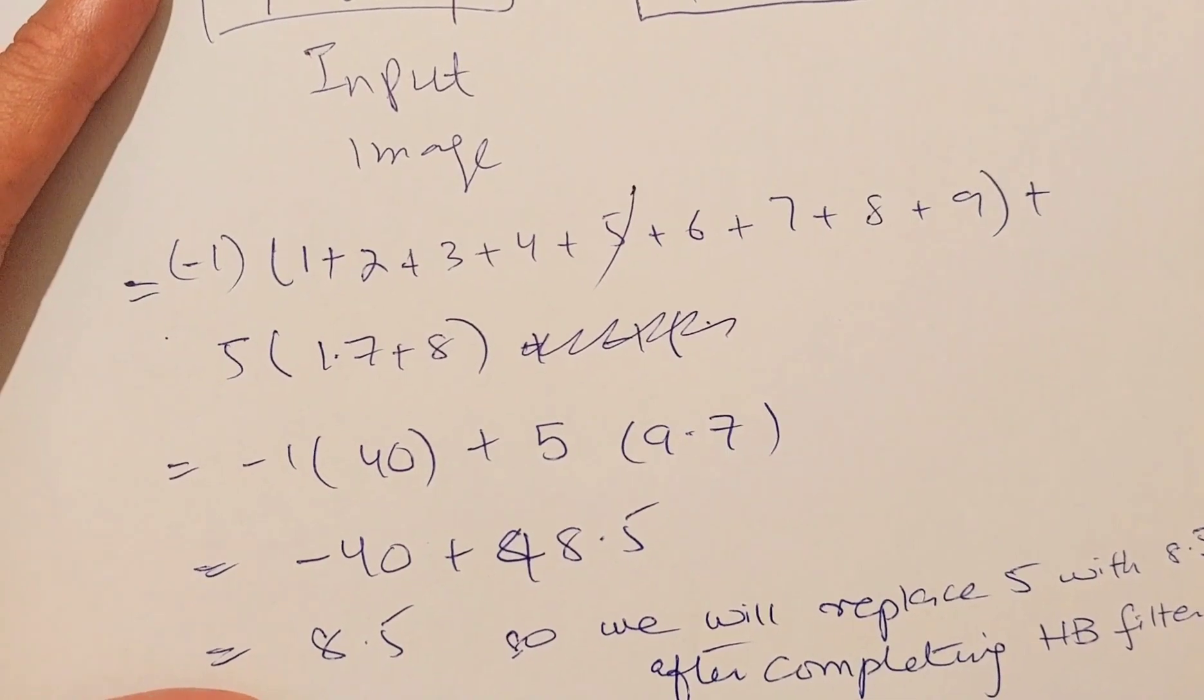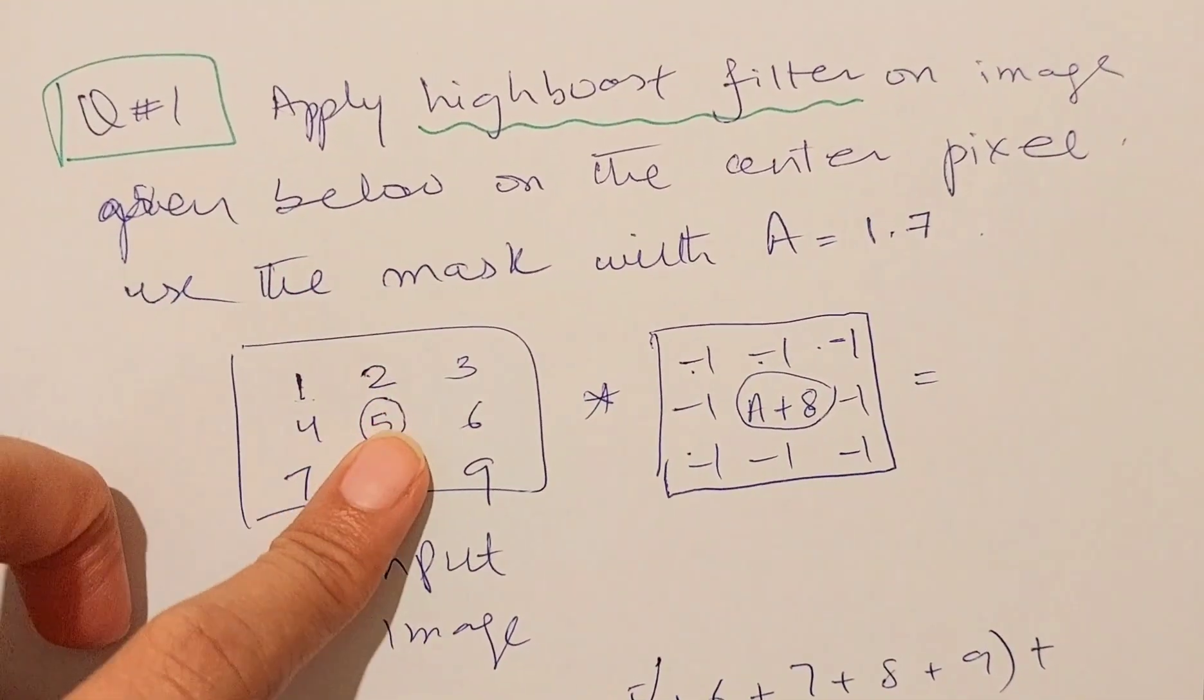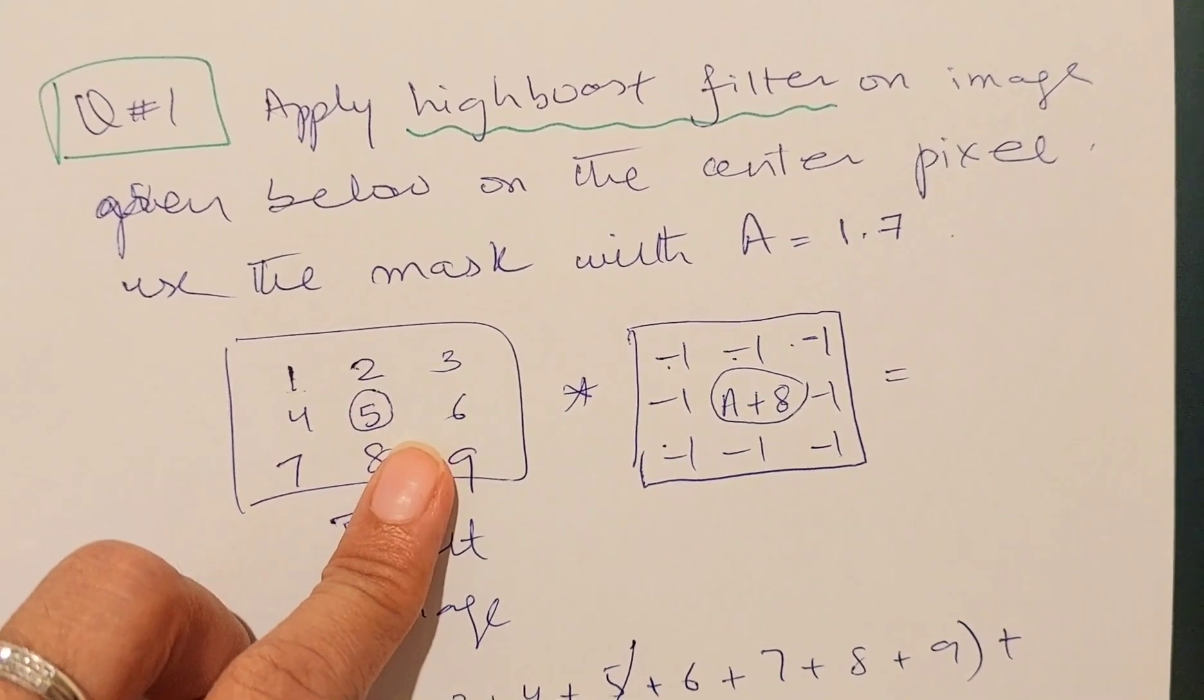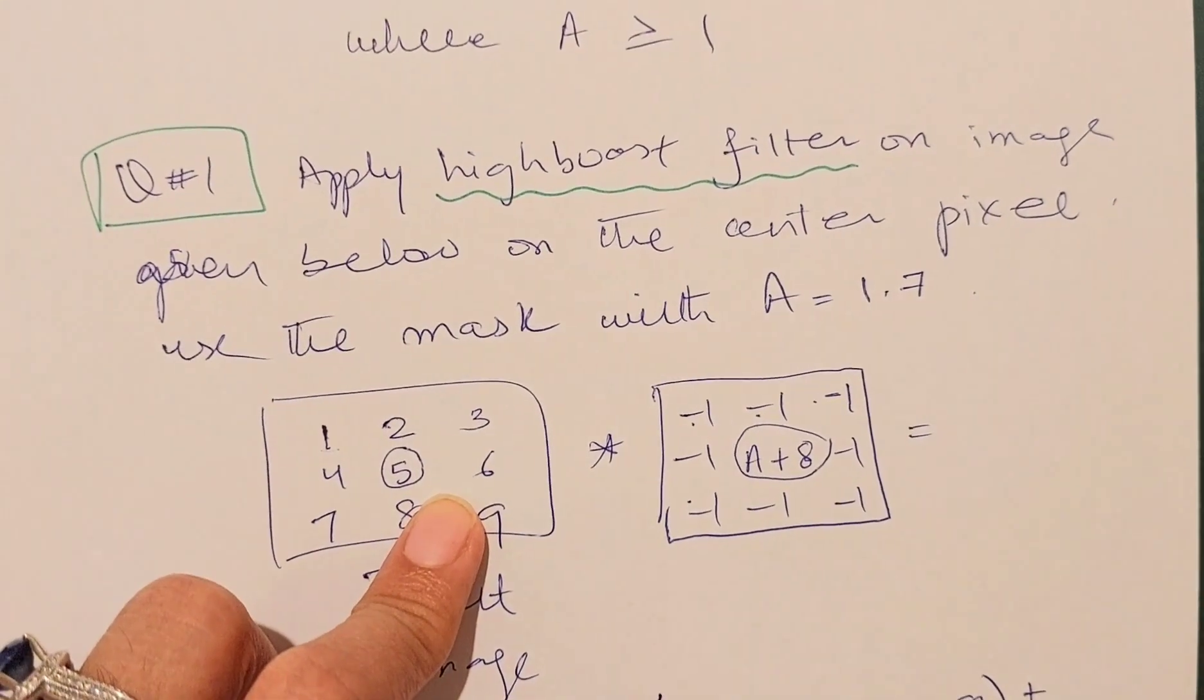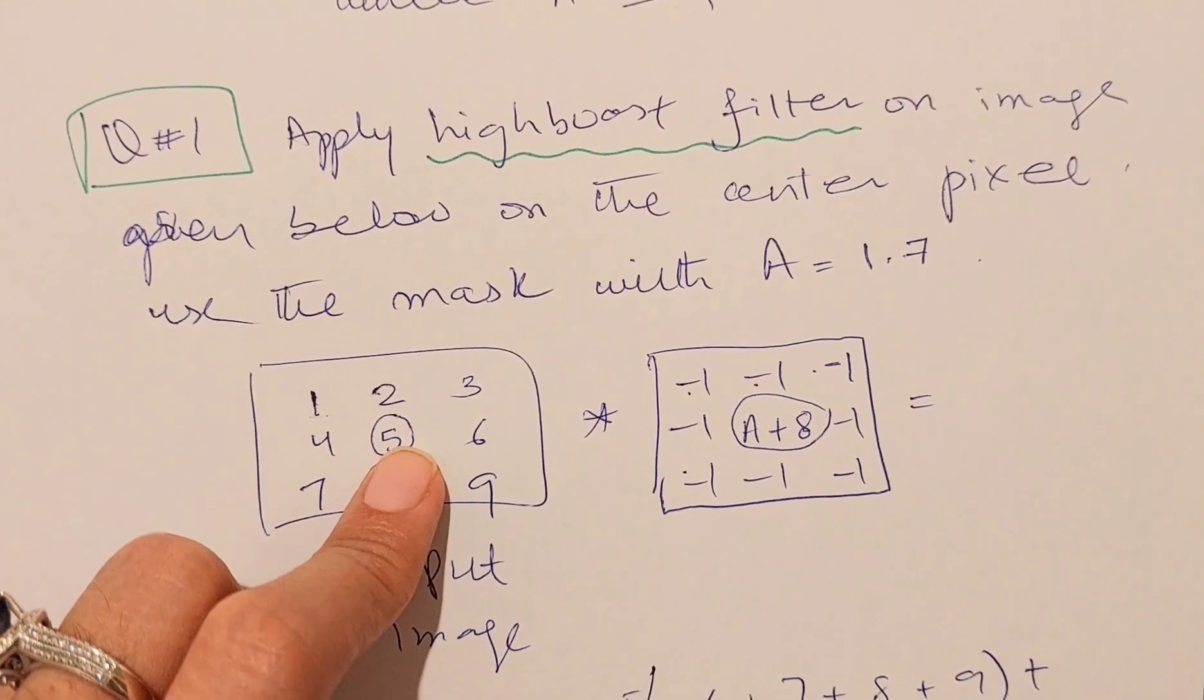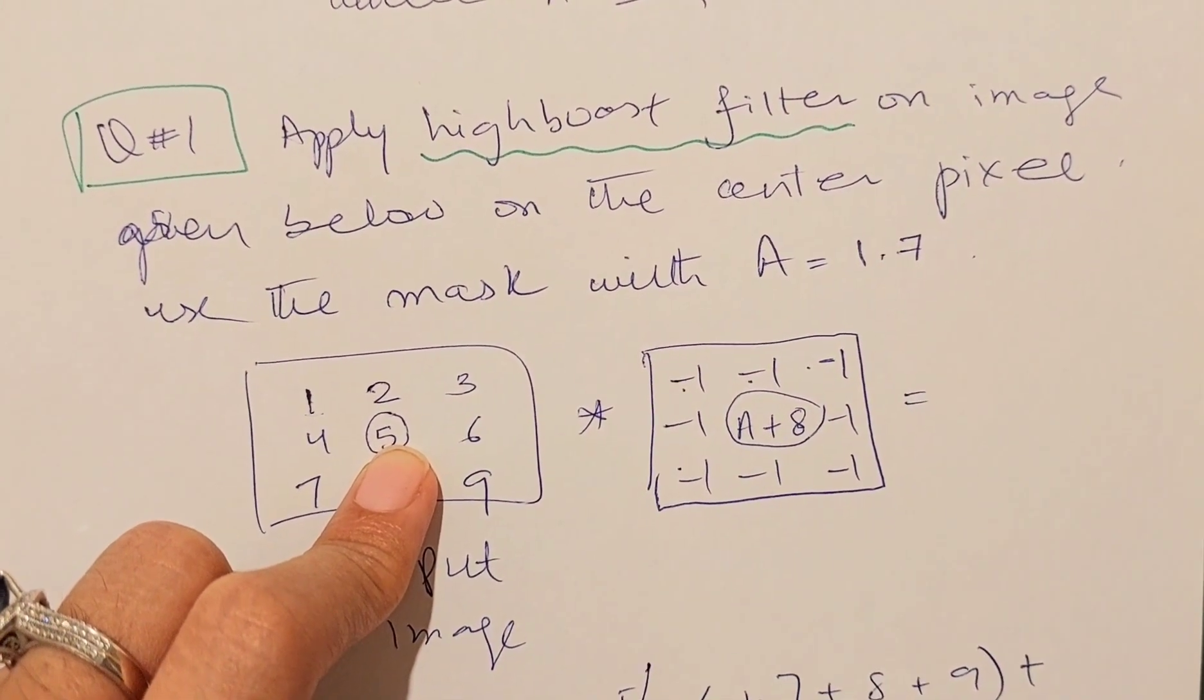This central value of the image is becoming 8.5. We find that by applying this high boost filter, the purpose of the image enhancement has been achieved, and the central pixel value has been boosted or we can say that it has been enhanced in its intensity value.